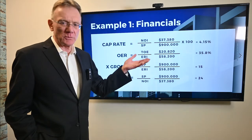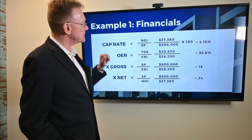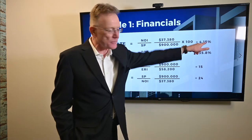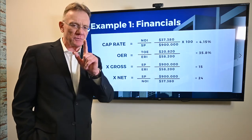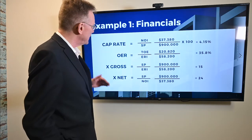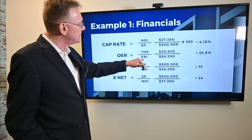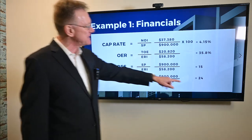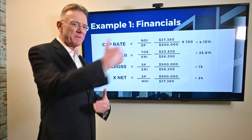Let's crunch those formulas. For the capitalization rate, our NOI is a little over $37,000 and we bought the building for $900,000 — that gives us a cap rate of 4.15. For the operating expense ratio, which tells you how much of your income goes to pay expenses, you take total operating expenses divided by effective rental income. In this case it comes out to almost 36%, meaning 36% of your income pays expenses.